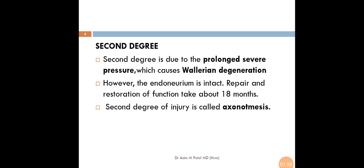Second Degree is due to prolonged severe pressure which causes Wallerian degeneration. However, the endoneurium is intact. Repair and restoration of function takes about 18 months. Second Degree of Injury is called axonotmesis.